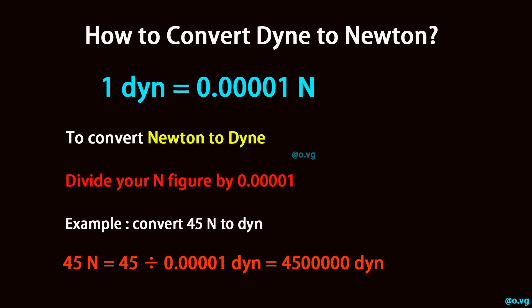To convert newton to dyne, divide your newton figure by 0.00001. Example: convert 45 newton to dyne. 45 newton equals 45 divided by 0.00001, which equals 4,500,000 dyne.